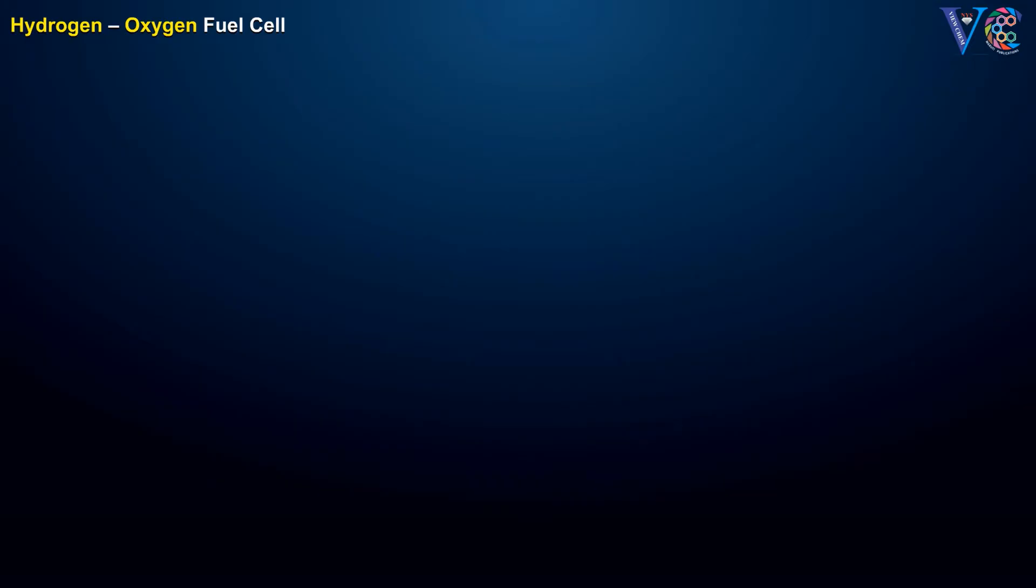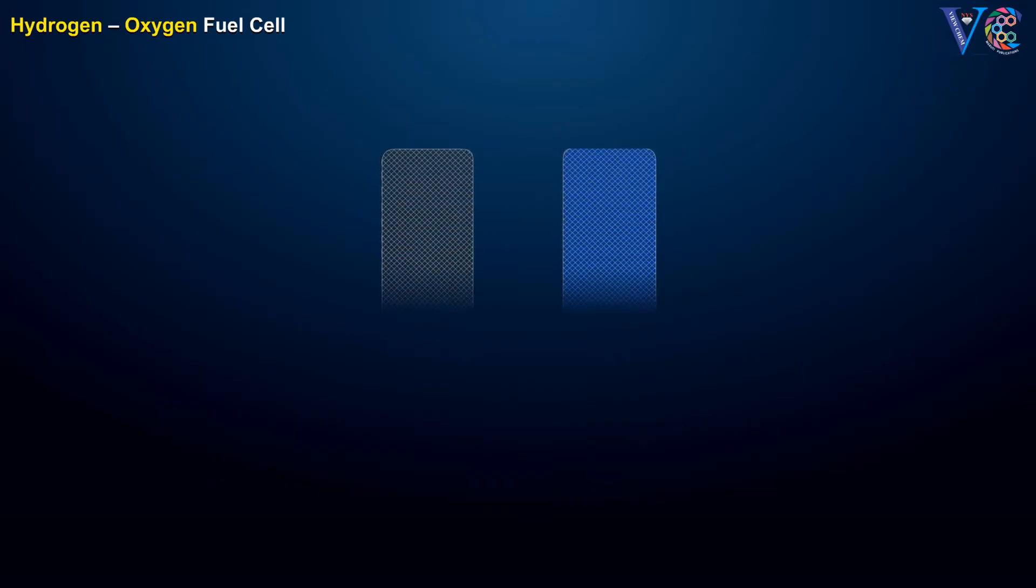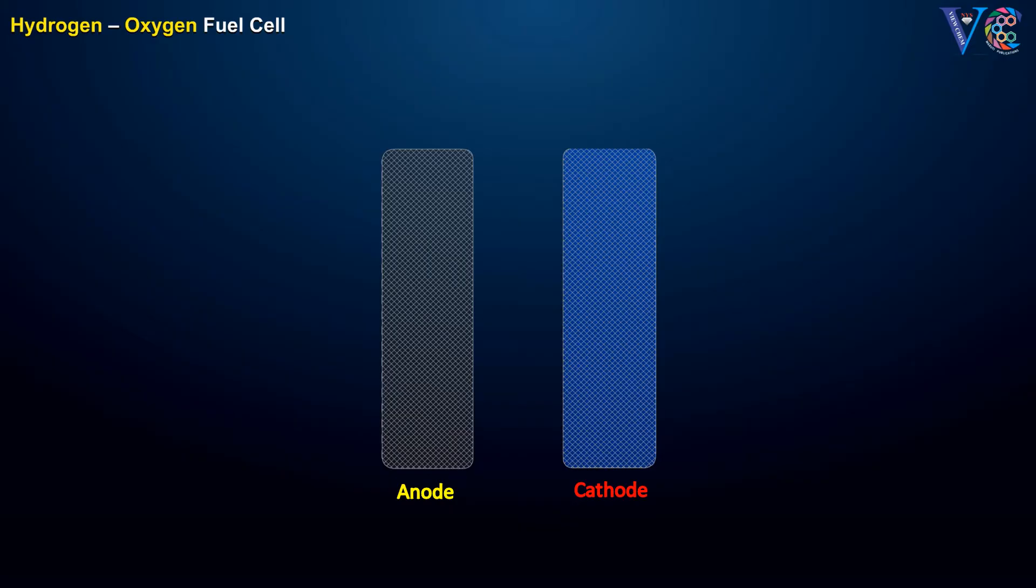Inert porous carbon or graphite electrodes are used as anode and cathode. On the surface of the electrodes, platinum nanoparticles are dispersed in the form of thin films. These platinum nanoparticles catalyze the cleavage of hydrogen molecules at the anode and oxygen molecules at the cathode.